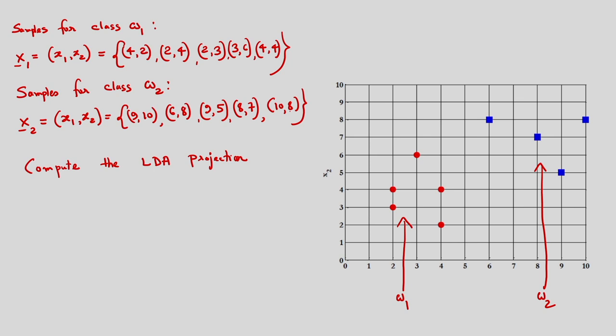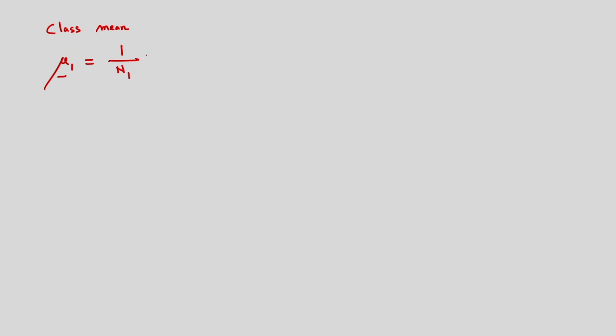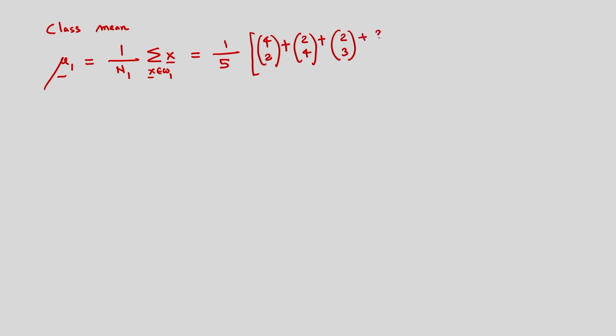Corresponding to this I have to determine the class means. The class mean mu 1 is nothing but 1 by n1, summation of x belonging to class omega 1. I have 5 samples corresponding to class omega 1: (4,2) + (2,4) + (2,3) + (3,6) + (4,4). We can compute this — the value will be 3, 3.8. This is the mean corresponding to class omega 1.